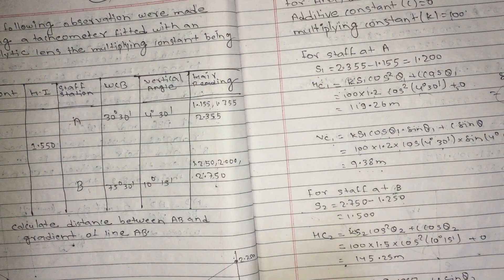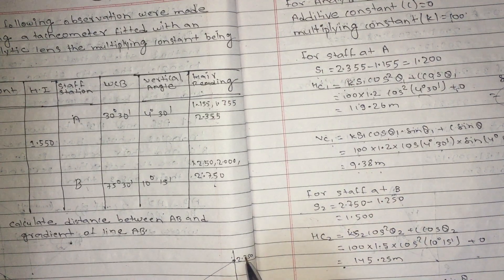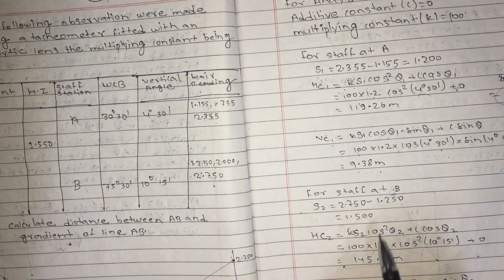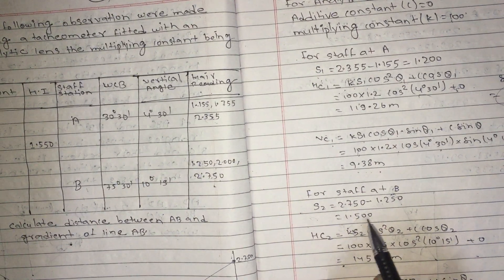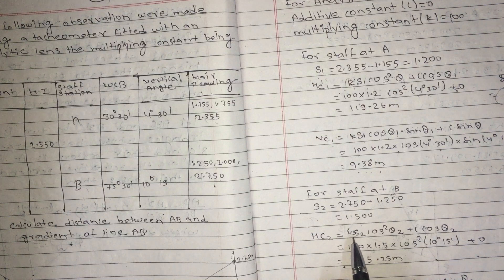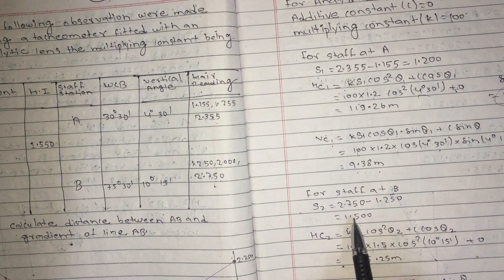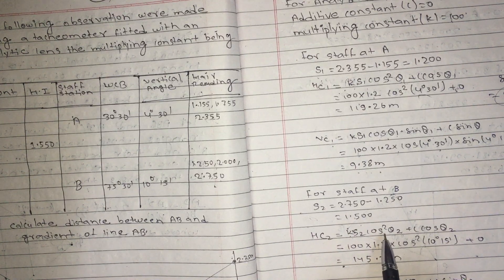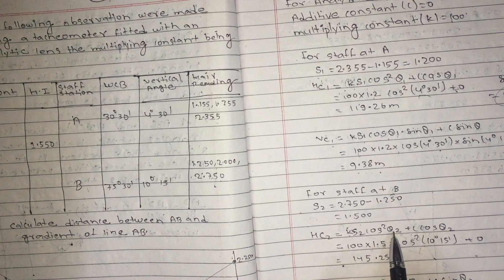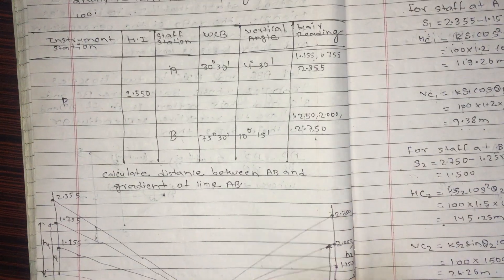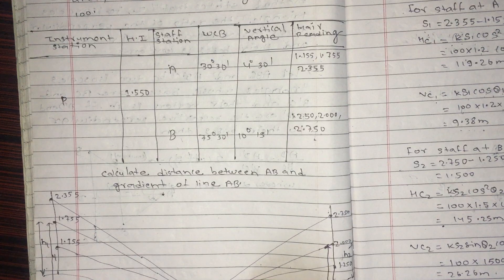Same process: upper reading 2.750, lower 1.250, so staff intercept S is 1.5. Key K equals 100. We use cos squared theta, and theta two is 10 degrees 15 minutes.